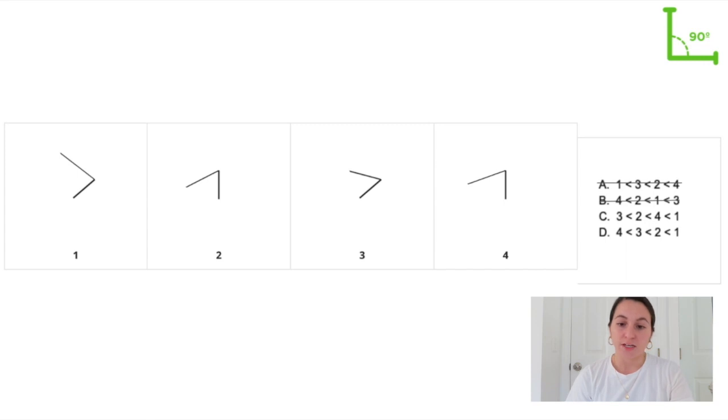So now we can look at the smallest angle which must be angle 3 or angle 4. So let's look at those two angles now and you can tell that angle 3 is the smallest so C must be the correct answer.